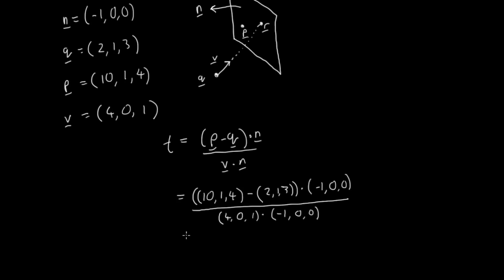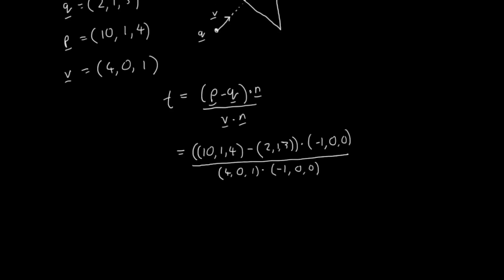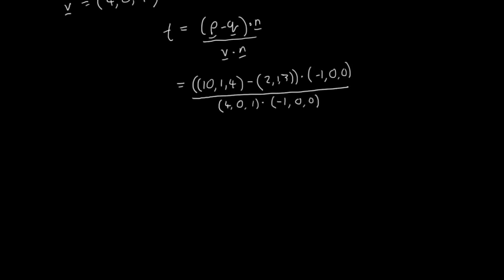Let's evaluate these dot products. Again, I'm going to scroll down just to give me a bit more room. So what we've got, I've got a vector subtraction here. So 10 minus 2 is 8. 1 minus 1 is 0. And 4 minus 3 is 1. And that's dot product, minus 1, 0, 0. Actually, I'm going to do that again. That's not very straight. And that's even worse. Third time lucky.